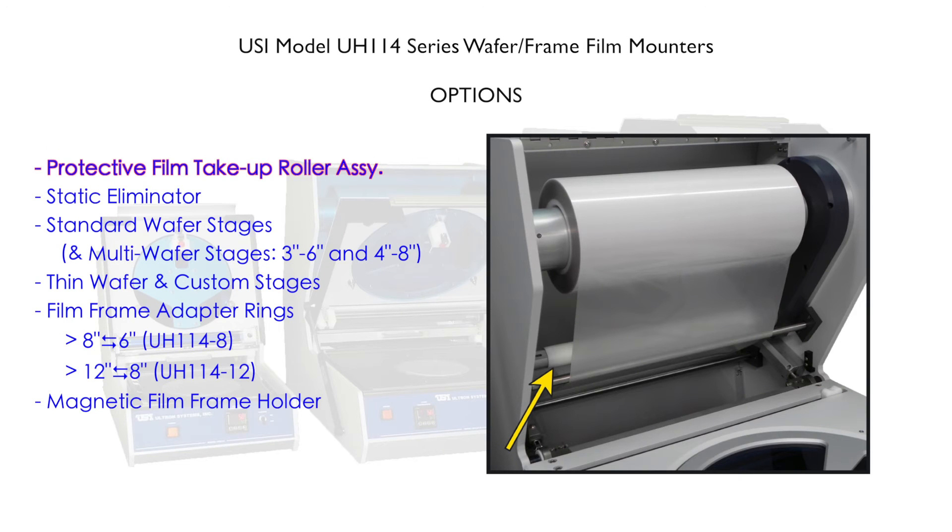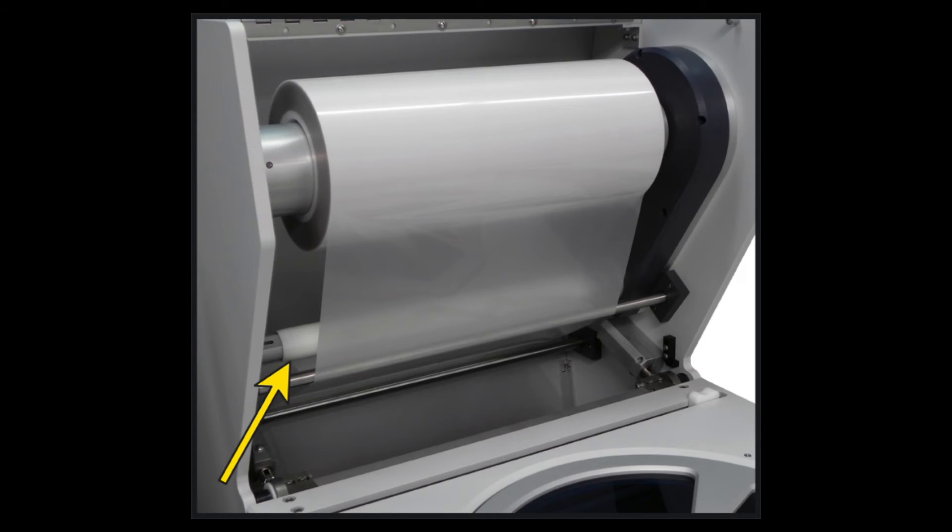Protective film take-up roller assembly. The protective film take-up roller assembly will accommodate backed film whether its protective backing is facing towards either the inside or the outside of the roll.